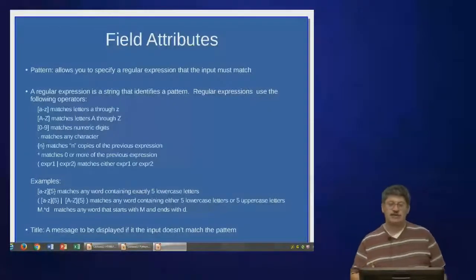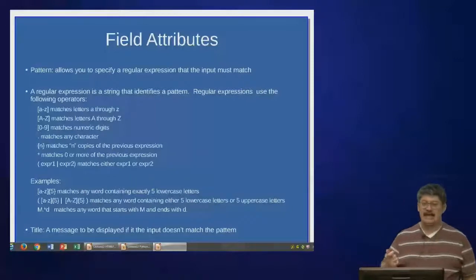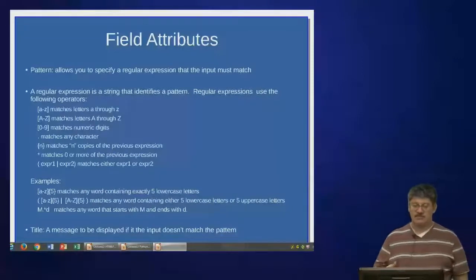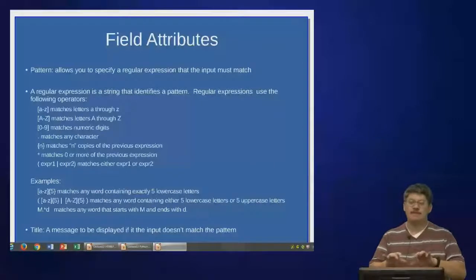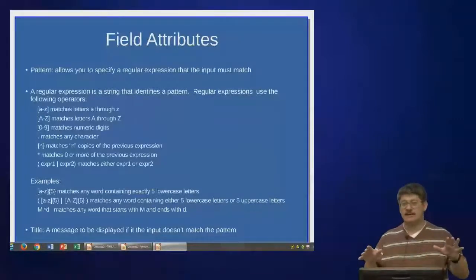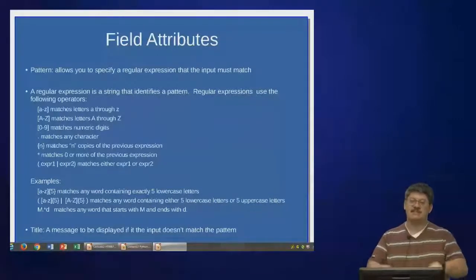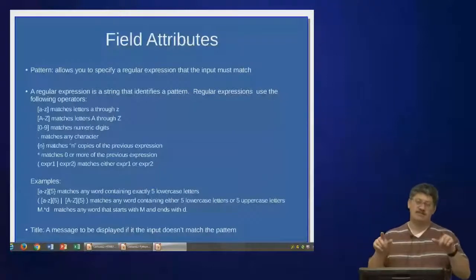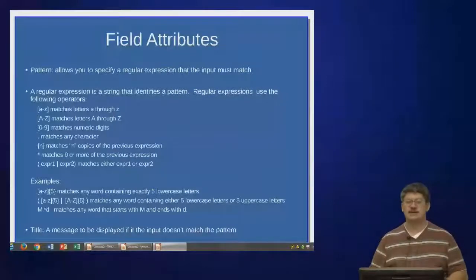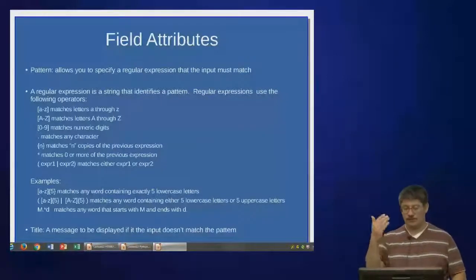Another attribute is the title, which is the text that comes up if the pattern doesn't match. So if you type in something that isn't a valid email address, you can display a message like 'that is not a valid email address — valid email addresses have an at sign.' You set a string in the title attribute and that message will appear.